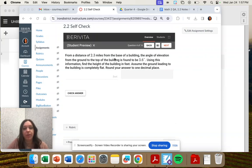From a distance of 2.3 miles from the base of the building, the angle of elevation from the ground to the top of a building is 3.6 degrees. Use this information to find the height of the building in feet.